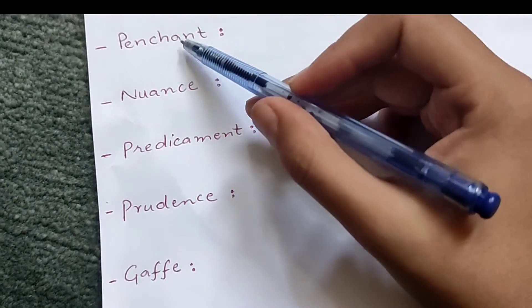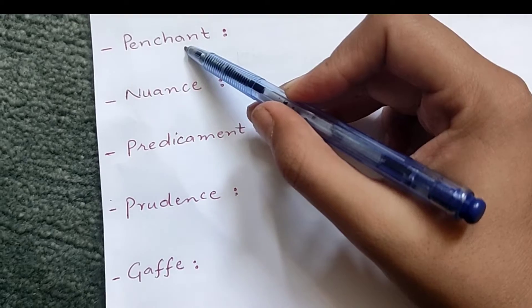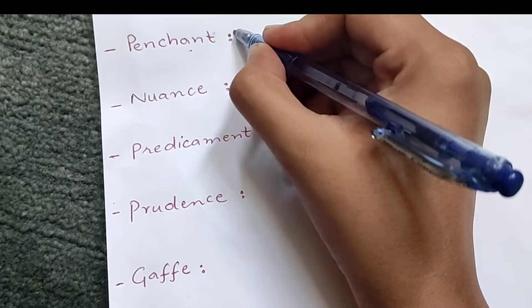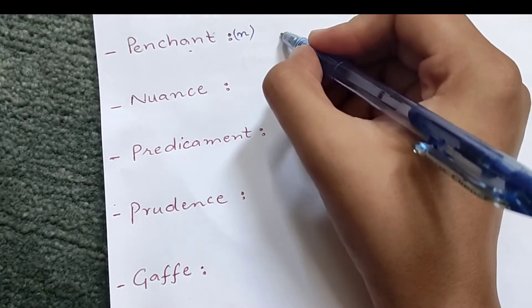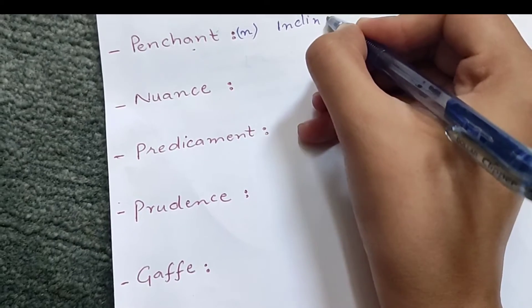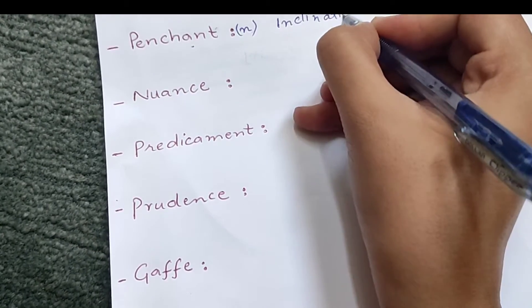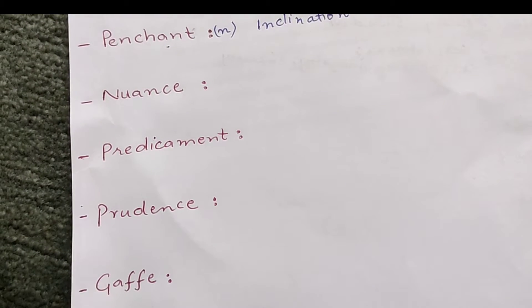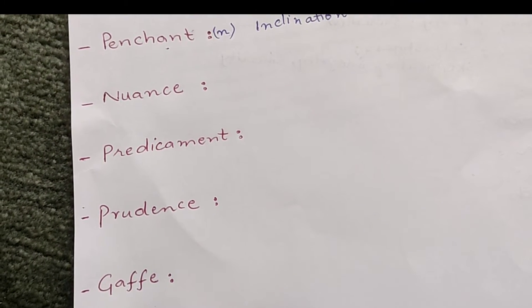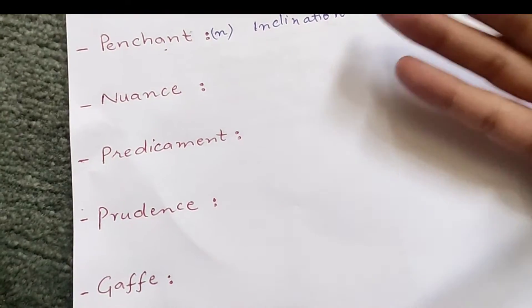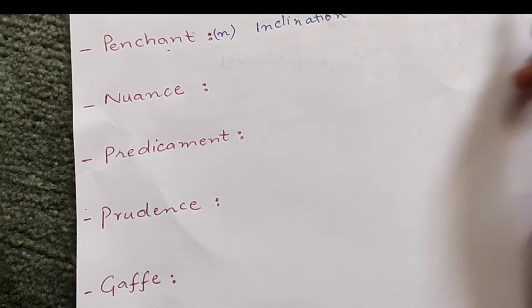So the first word which I have chosen is penchant. It is a word which is used as a noun and this means inclination, attraction. If you tilt towards something, then it is called you are penchant about something. So we call it penchant.